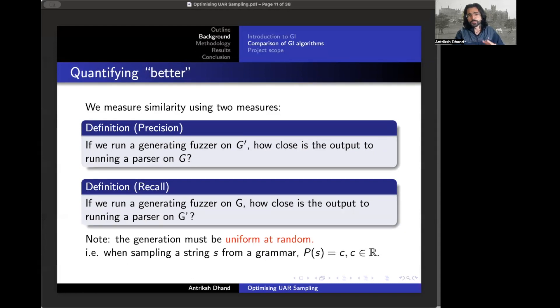Now we've got to define similarity. We can do this through two measures, precision and recall. The idea behind precision is if you take the inferred grammar and generate strings from it, how many of those strings would be valid according to the original grammar? Recall is just the inverse. If you generate strings from the original grammar and then try and parse those strings using the inferred grammar, how many will be accepted? Note that the main thing that lies at the bottom of both precision and recall is the generation of strings must be uniform at random. And what this means is that the probability of picking any string from the grammar must be equal.